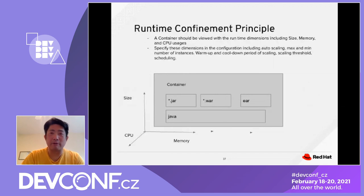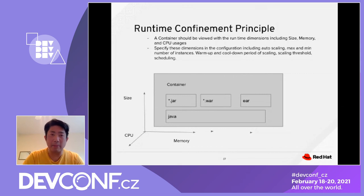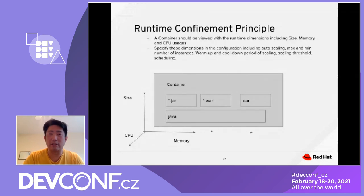The Runtime Confinement Principle: each container should be viewed as a runtime dimension, including storage size, memory, and CPU usage. You need to specify this dimension in the configuration, including auto-scaling max and min number of instances, warm-up and cool-down period of the scaling, scaling threshold, and scheduling. All of this needs to be considered and identified during the container definition.